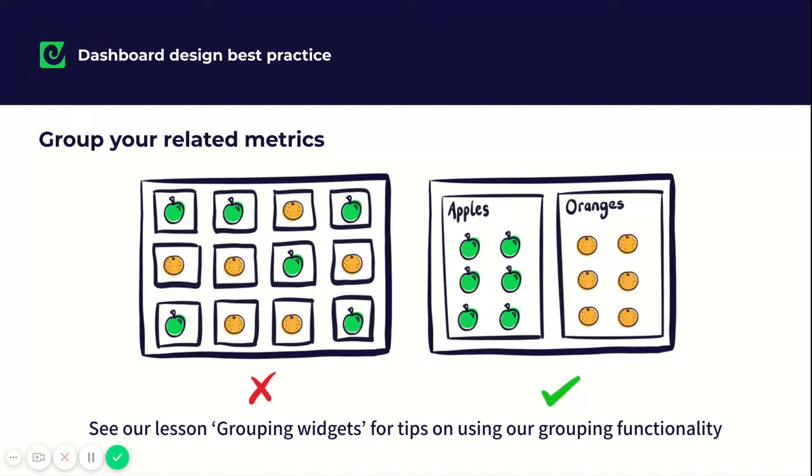As you can see in this example, it makes much more sense to group the apples and oranges and anyone viewing this will know that those numbers are all related. Take a look at our lesson on grouping widgets if you need help with how to do this within GeckoBoard.